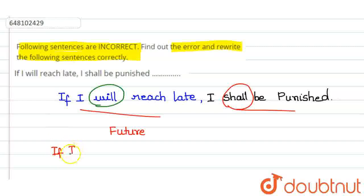If I reach late, if I reach late, I shall be punished. So, there is no need of this auxiliary verb will here in this sentence.